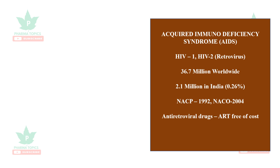HIV is of two types: HIV-1 and HIV-2. Throughout the globe, HIV-1 is more prevalent, while HIV-2 is more prevalent in African countries. Worldwide, approximately 37 million people are infected with AIDS. In India, out of the 135 million population, 2.1 million are infected with HIV.